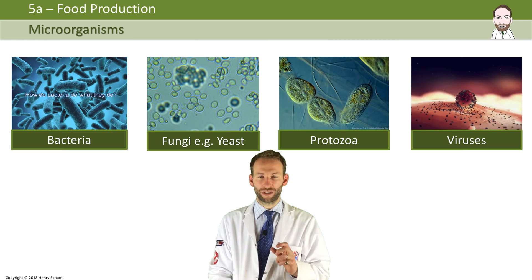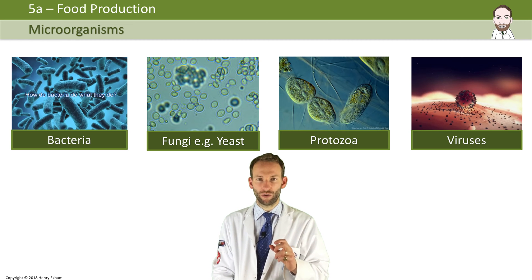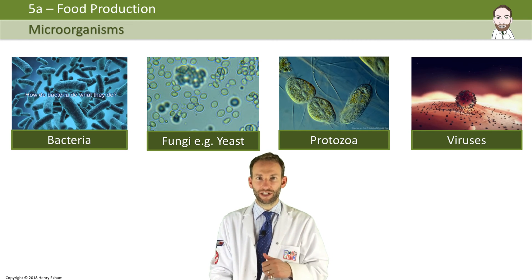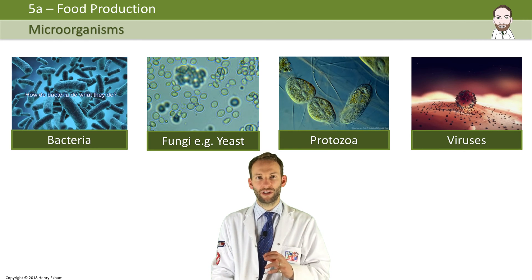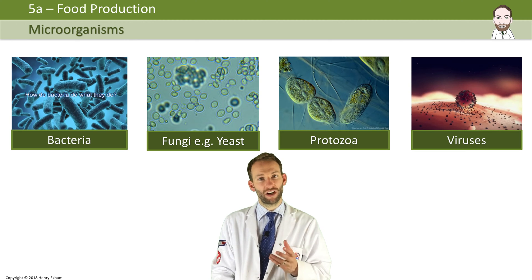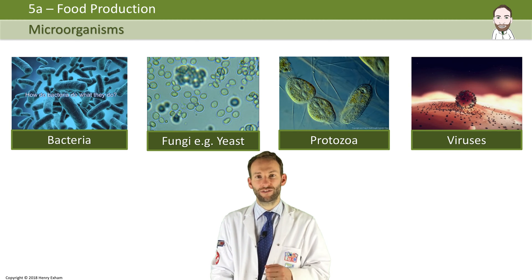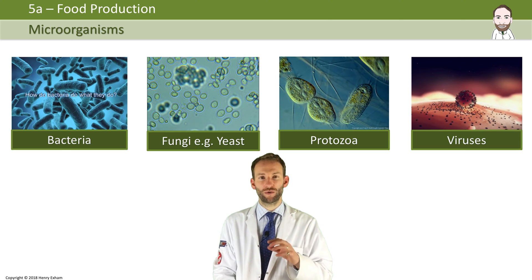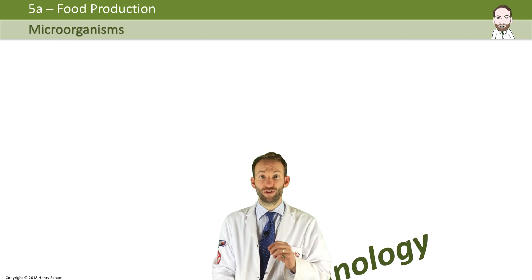Let's now talk about microorganisms and their role in food production. Microorganisms are living organisms that can only be seen with the help of a microscope. They can cause serious disease in humans, or they can be harnessed and used for our benefit. Microorganisms can be used in food production — we call this process biotechnology.